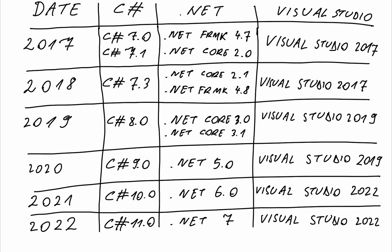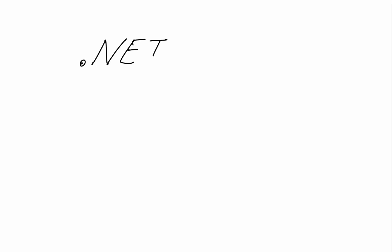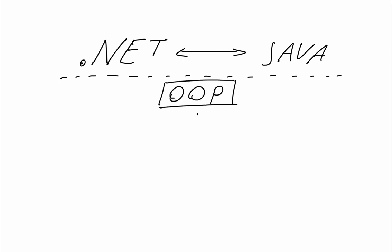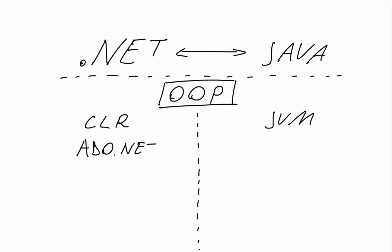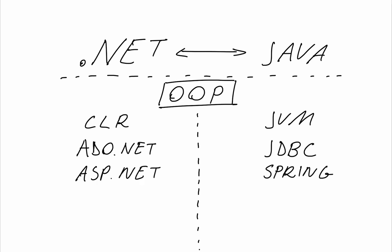Speaking of multi-platform compatibility, there were a lot of reactions stating that C-sharp and .NET would be a response to Java. At that time, a lot of professionals also said that C-sharp and .NET would actually be a copy or a ripoff of Java. The reason for these statements would be the high amount of resemblances between the two. First of all, both Java and .NET are object-oriented. Also, .NET's CLR resembles Java's JVM. ADO.NET would be an equivalent to JDBC. ASP.NET resembles Java's Spring, and NuGet Package Manager would be an equivalent to Maven.